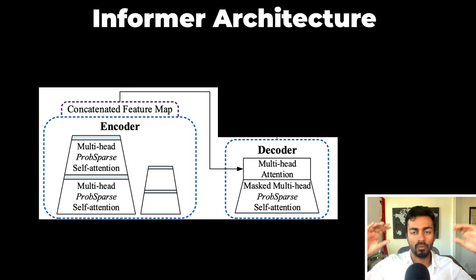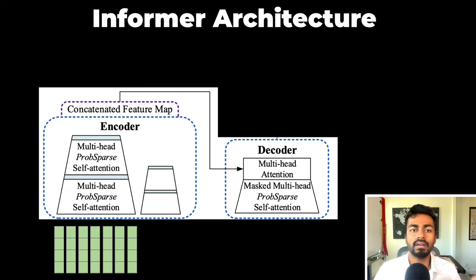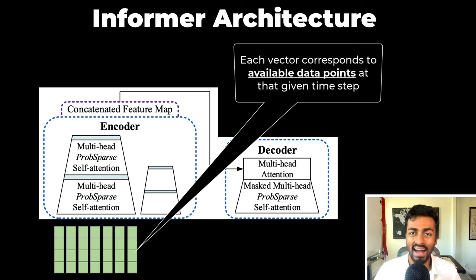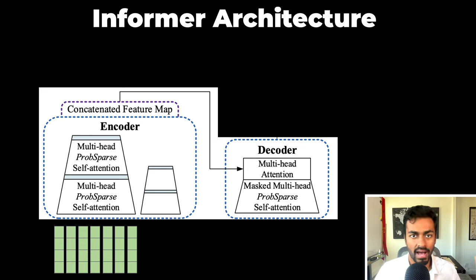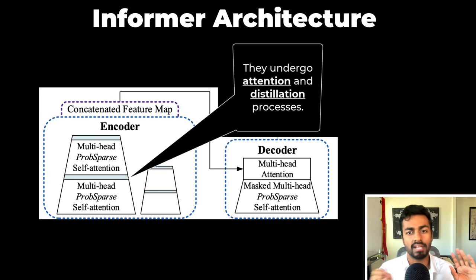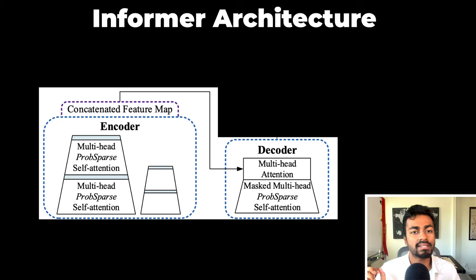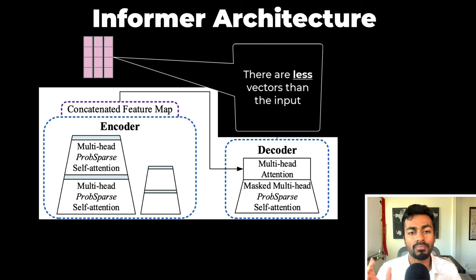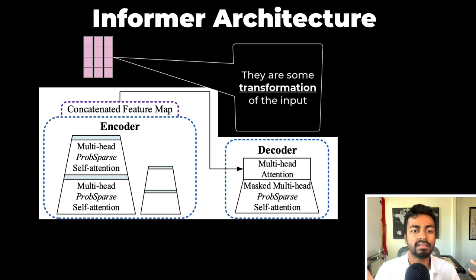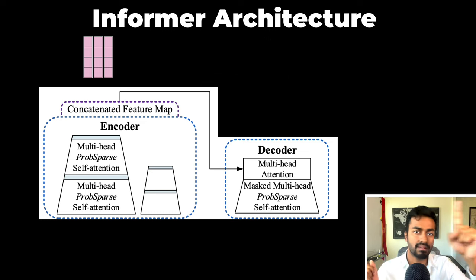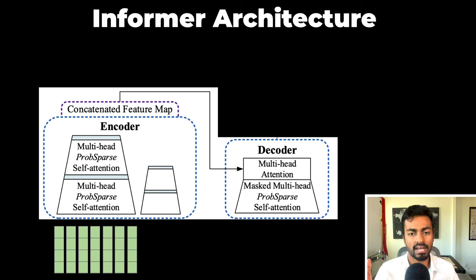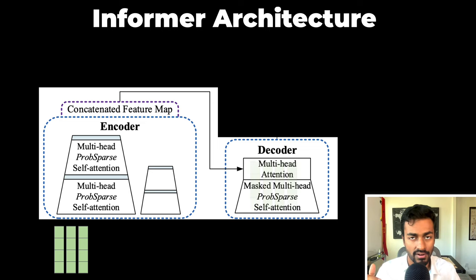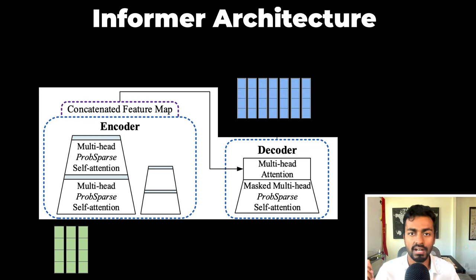For this first pass, let's illustrate a high-level working of the informer. This is the informer architecture, and to the input we pass some time series vector. Each vector corresponds to available data points at that given time step. This information is then passed into the encoder, where it undergoes some attention and distillation operations and we get some output encoder vectors. These output vectors have fewer time steps than the input. They are then passed into the decoder, along with some subset of the input as context, and we generate the next chunk of time steps as the output.